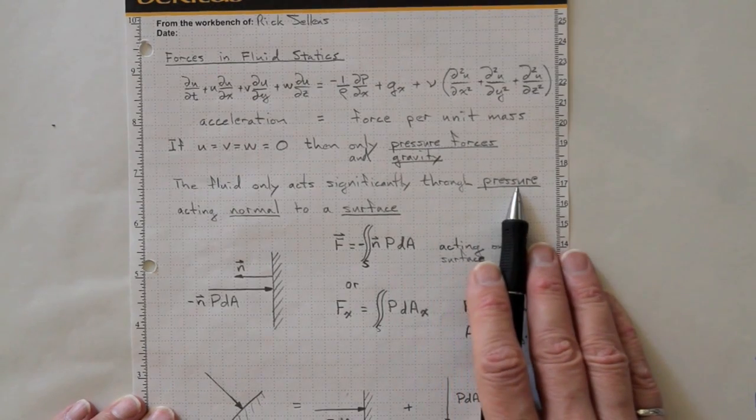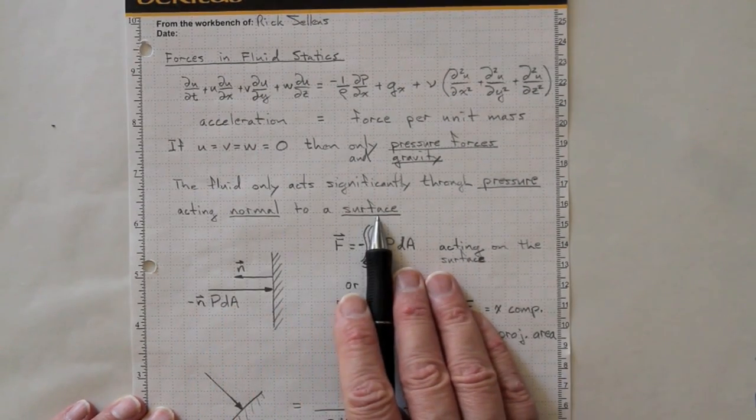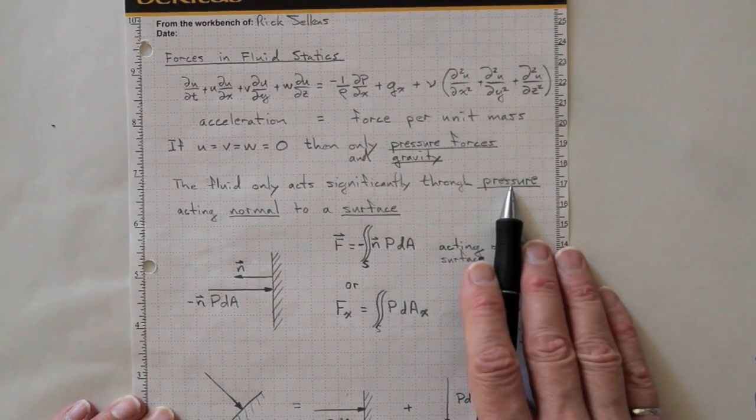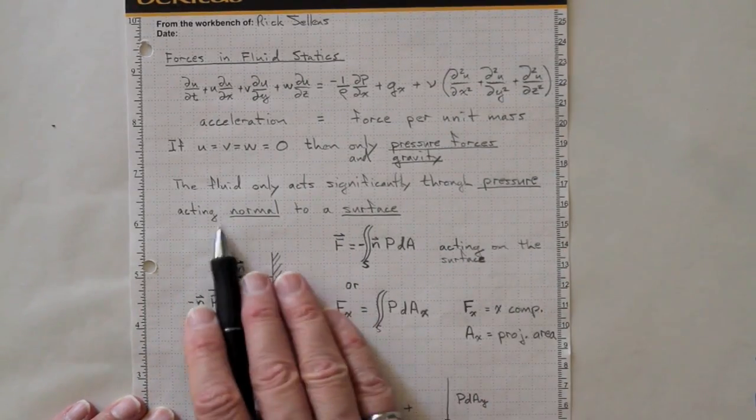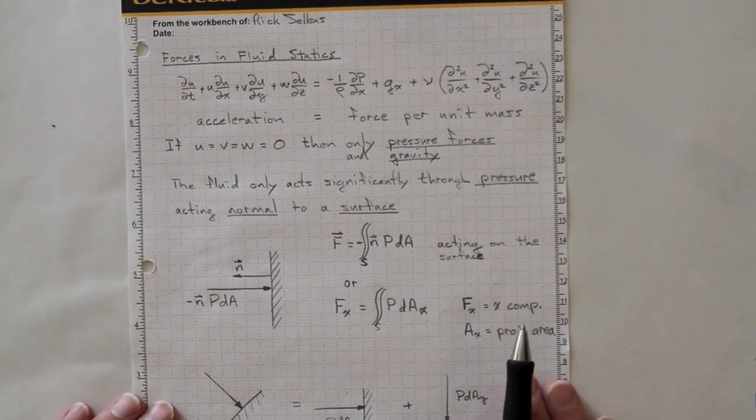The fluid only acts significantly through pressure acting normal to a surface in a static situation. Or we can use the same approach to figure out the component of force due to the pressure acting normal to a surface, even in a dynamic situation like the flow over a wing.